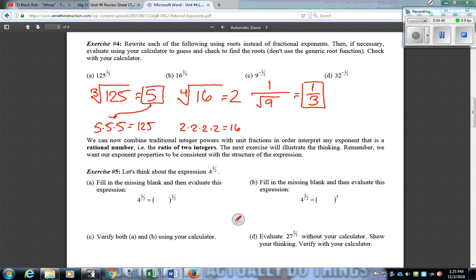And then for 32 to the negative 1 fifth power, I'm going to make it into a positive exponent by putting it in the opposite side. This would be the fifth root of 32, and then that would equal... The bottom part would equal 2. You can do all these roots in the calculator.